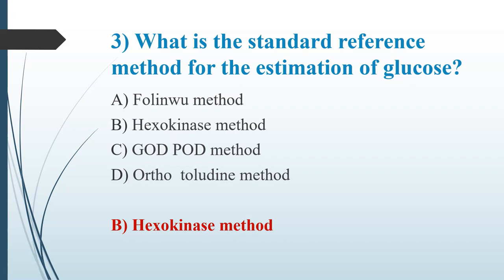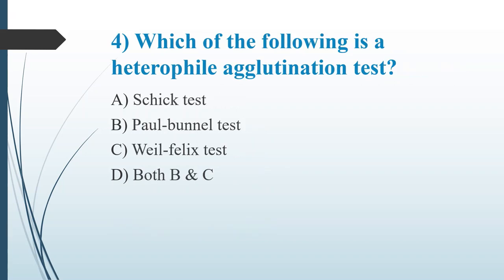Fourth question: Which of the following is a heterophile agglutination test? Option A: Schick test. Option B: Paul-Bunnell test. Option C: Weil-Felix test. Option D: Both B and C. The answer is Option D, both B and C — the Paul-Bunnell test is used for detection of Epstein-Barr virus in infectious mononucleosis, and the Weil-Felix test is used for detection of typhus fever caused by Rickettsia. In heterophile agglutination tests, heterophile antibodies present in the sera of the patient are detected. The Schick test is used for determination of susceptibility to diphtheria.